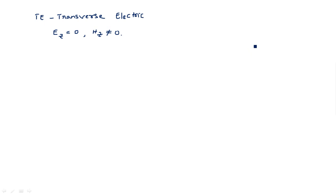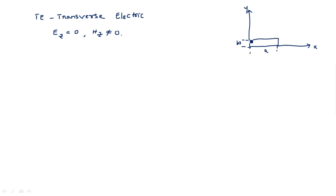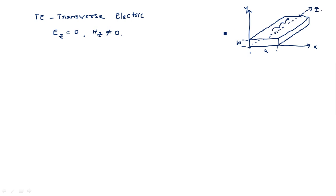Z is the direction of propagation. We have taken a rectangular waveguide such that the breadth A is along the X axis and the width B is along the Y axis. The rectangular waveguide is placed in the direction of Z, which is the direction of propagation of the wave.